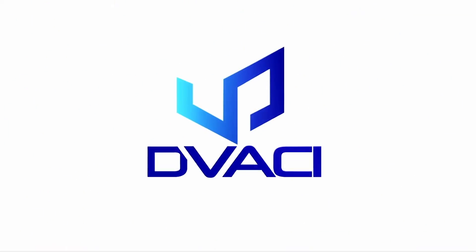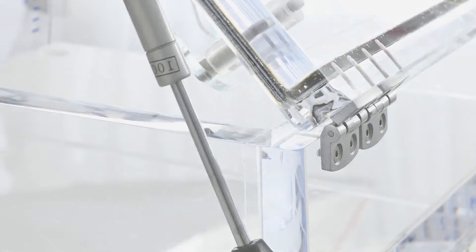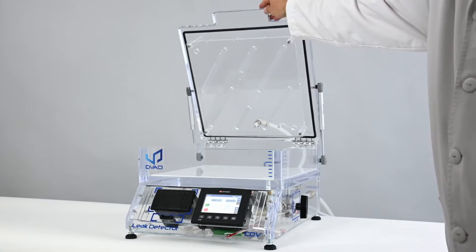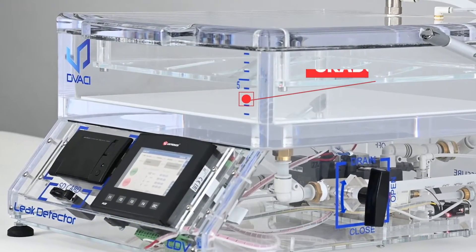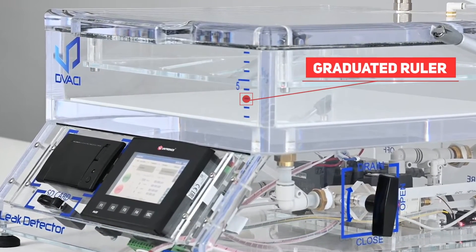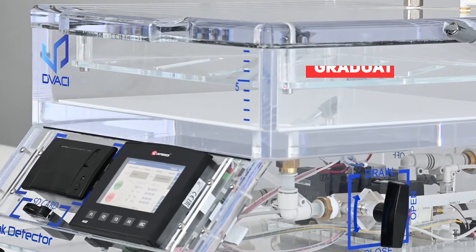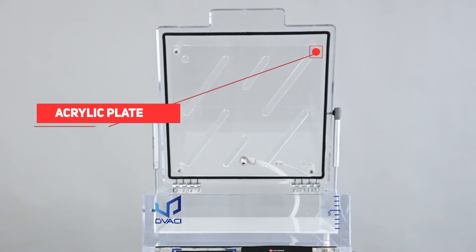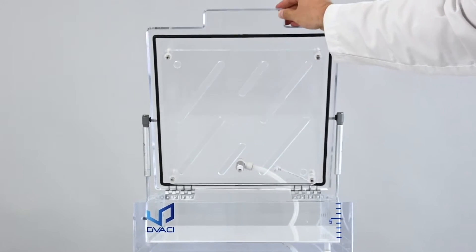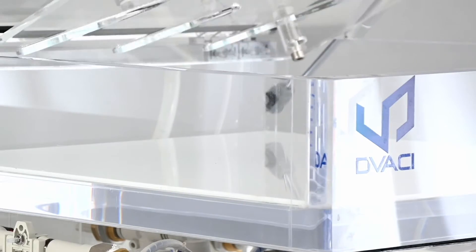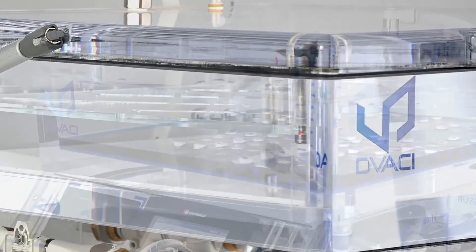The dimensions of the vacuum chamber have been specifically designed to optimize the amount of dye necessary to submerge the samples. A ruler graduated in centimeters will help you determine the amount of liquid for each test. By placing the acrylic plate at its lowest setting, only 1 liter of liquid will be necessary to submerge the packaging within a height less than 1.5 centimeters.